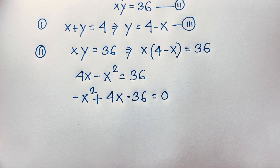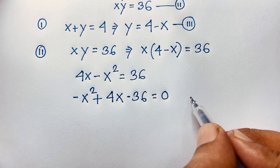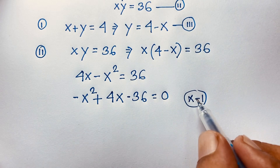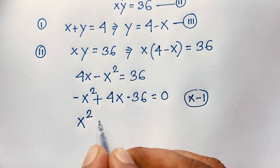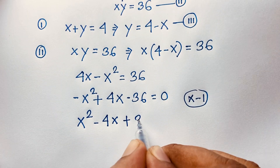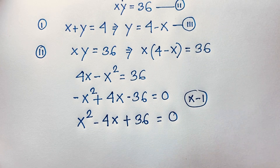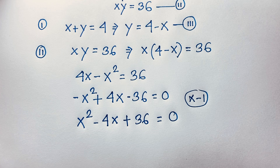Now at this point, you can see there is a minus sign. So if I multiply both sides by minus 1, it will become positive x squared, minus 4x, plus 36 is equal to 0. So here is a nice quadratic equation: x squared minus 4x plus 36 is equal to 0.